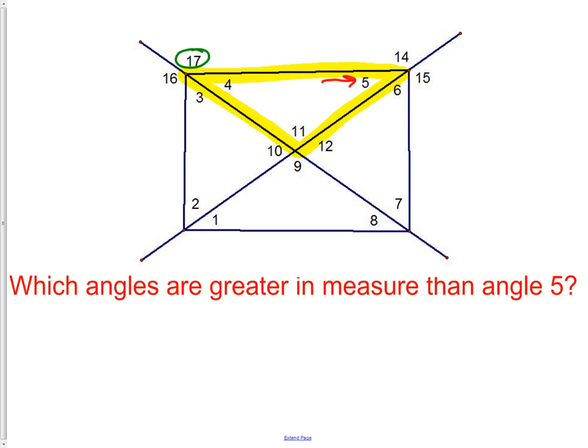We could also look at it from the perspective of angle 12. Angle 12 would also have to be bigger than 4 and 5. That means 12 and 17 are both bigger than angle 5. 12 is vertical to 10. Now we have another one.